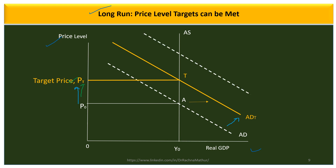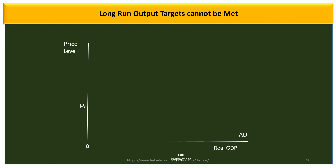In the long run, the central bank cannot influence output. Since the aggregate supply curve is a vertical straight line at full employment, any shift in aggregate demand only changes the price level — it does not change output. Thus, an output target YT cannot be met in the long run. In contrast, in the short run the aggregate supply curve is upward sloping, so the central bank can increase aggregate demand to move to a new equilibrium and achieve the output target.